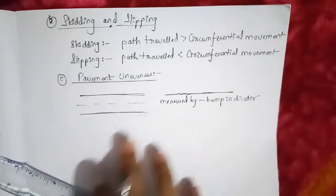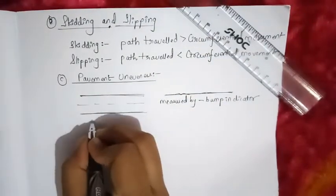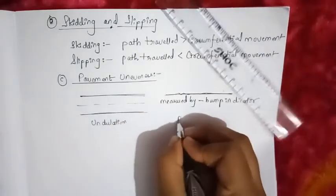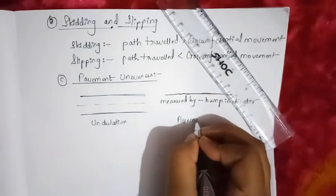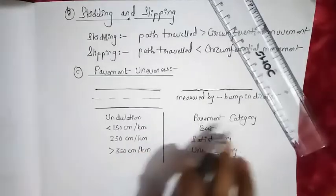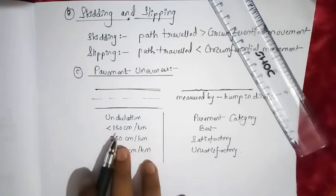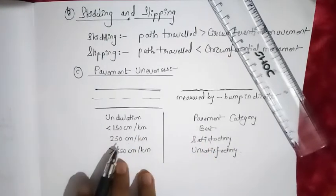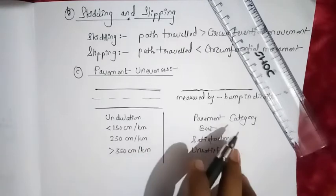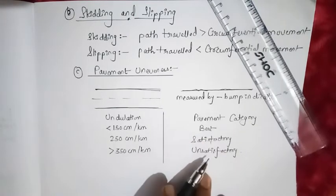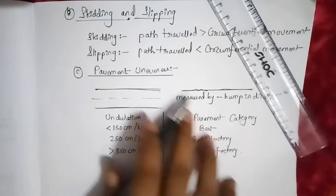We classify unevenness into three categories based on undulations. If undulation is less than 150 cm per km, the pavement is categorized as best. When undulation is 250 cm per km, the pavement is categorized as satisfactory. When undulation is greater than 350 cm per km, the pavement is categorized as unsatisfactory. That is all about pavement unevenness.